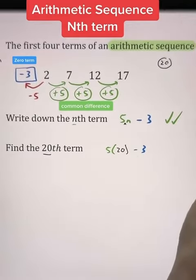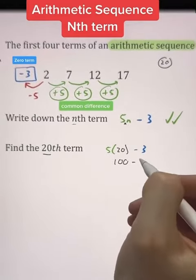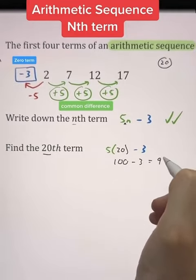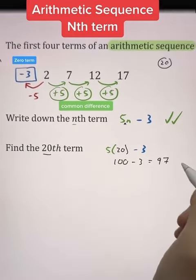Well, 5 times 20 gives us 100, and 100 subtract 3 gives us 97. So the 20th term of our sequence equals 97.